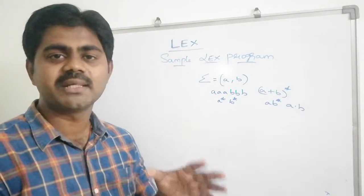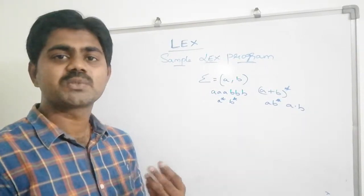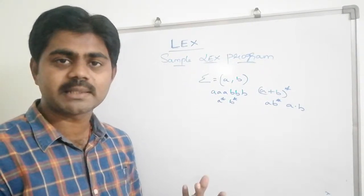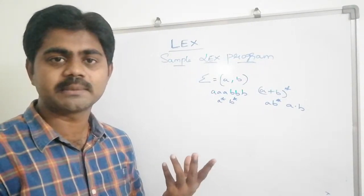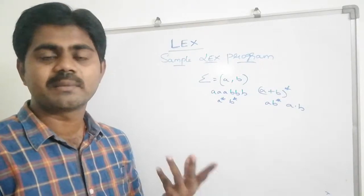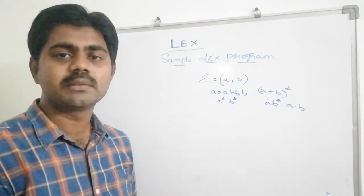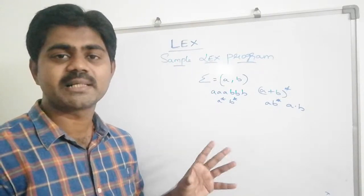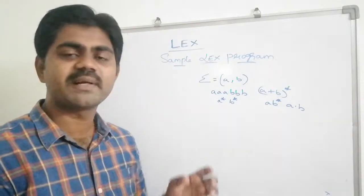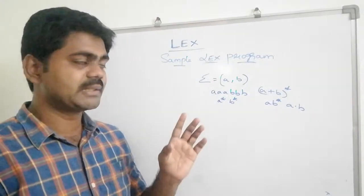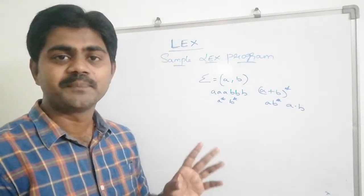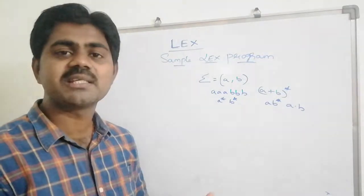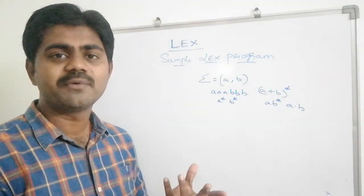From those tokens, we generate a parse tree. From the parse tree we check whether the syntax is meaningful or not. From there we generate intermediate code, then we optimize our code, and finally we generate our target code using different instructions. This is exactly what happens in the compilation pipeline.